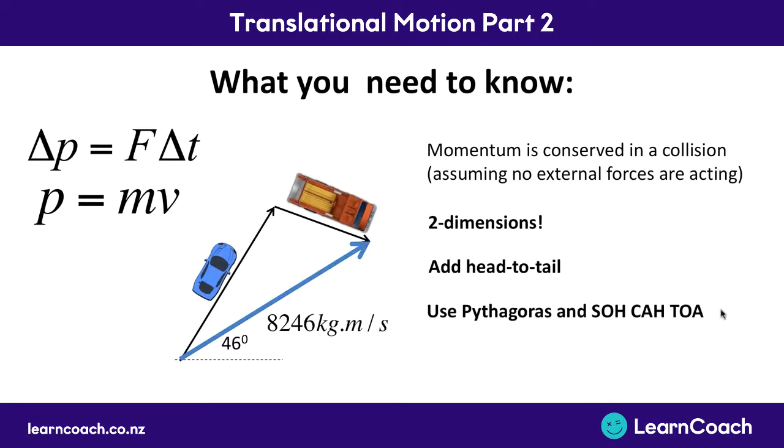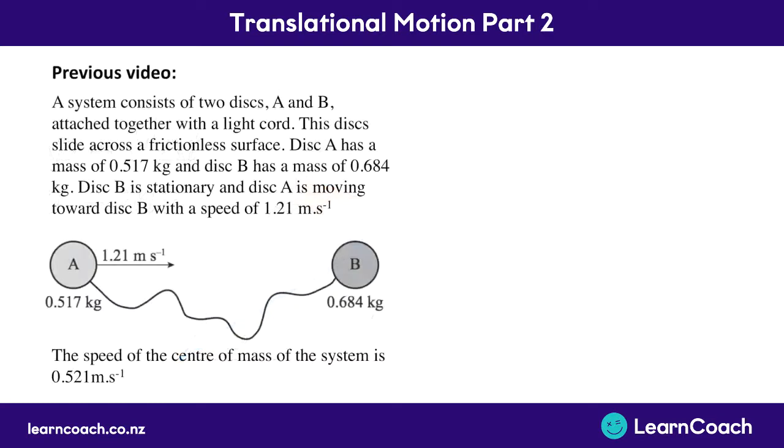You're going to have to use Pythagoras and SOHCAHTOA to figure out these lengths and these angles, and any of these have a size which is the length of the arrow, that's the 8,000 number here, and a direction which is an angle so you'll need to calculate. Let's try a question now.